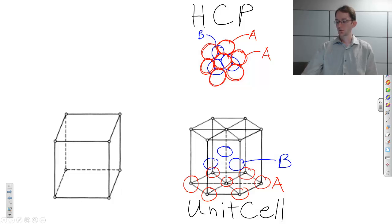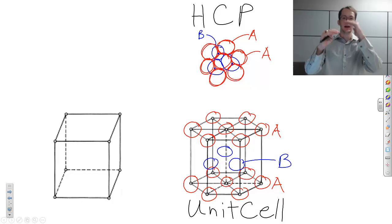The atoms on the next plane would sit somewhere here, and this would be plane B. And then the atoms on the top plane would sit and look very similar to that first A plane, so we also call it A. We have an A, B, A, B, A, B stacking sequence of close packed planes.